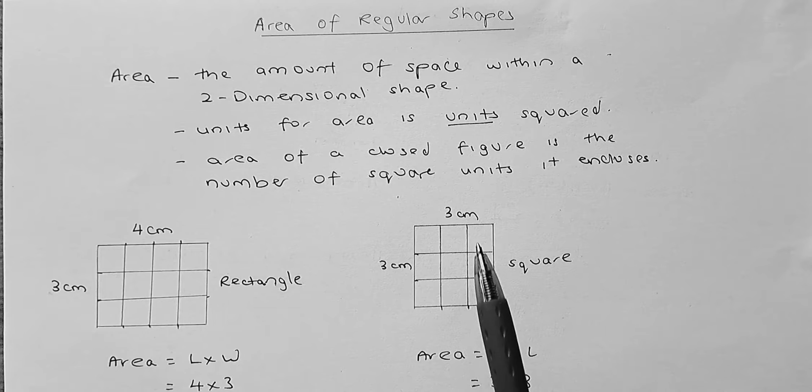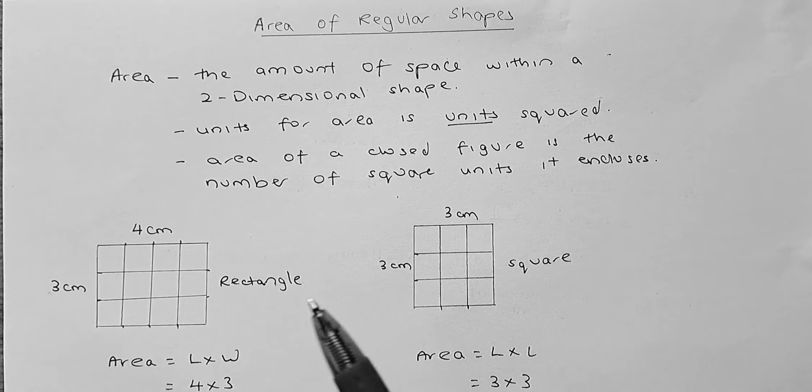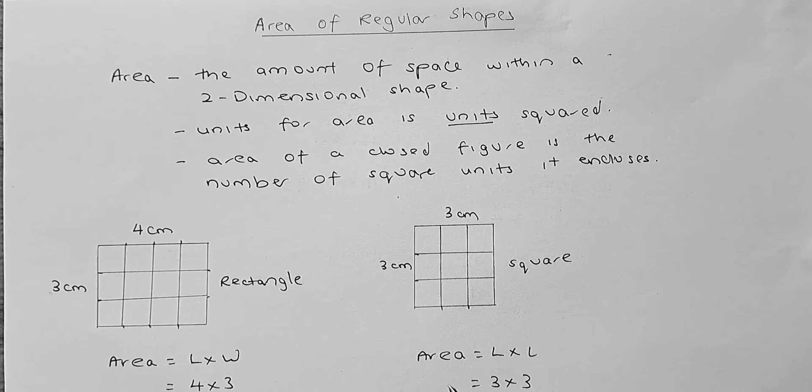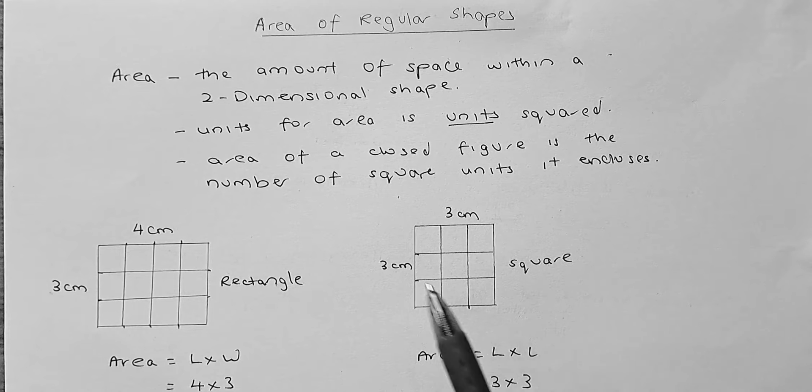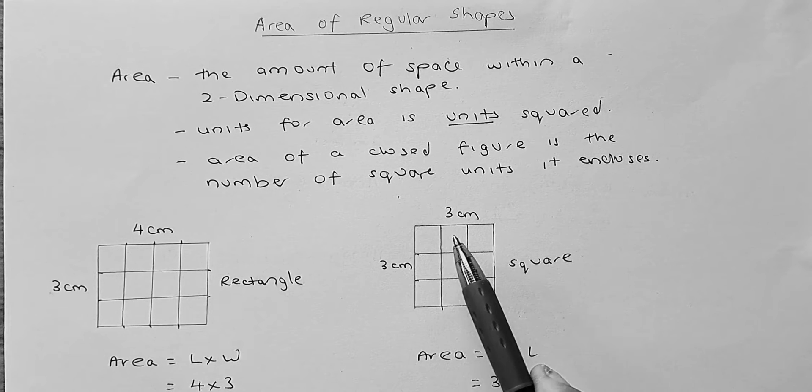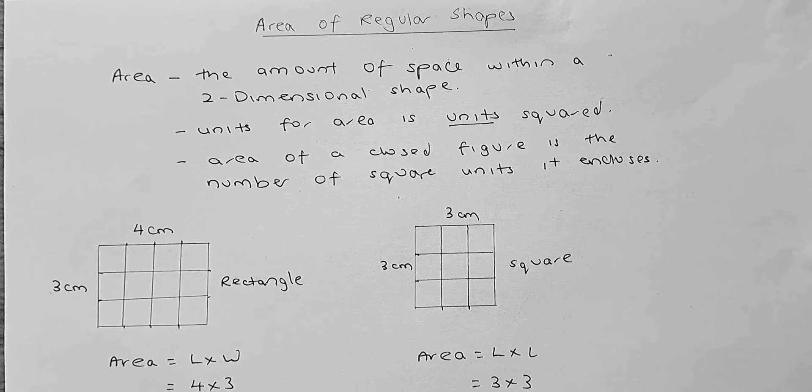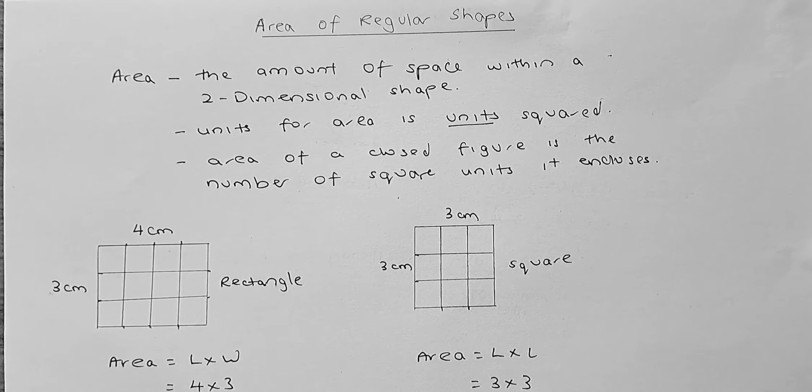Similarly, in a square, 3 cm by 3 cm, the formula to calculate area is length times length. So, 3 times 3 is going to be 9 or if you count the number of squares, there are all together 9 square units in the diagram there.